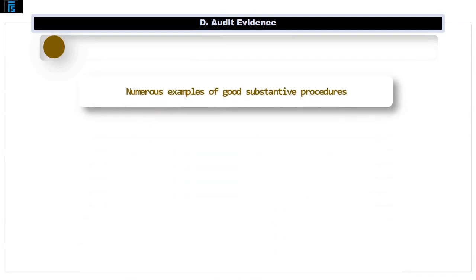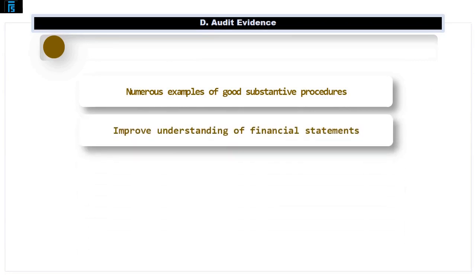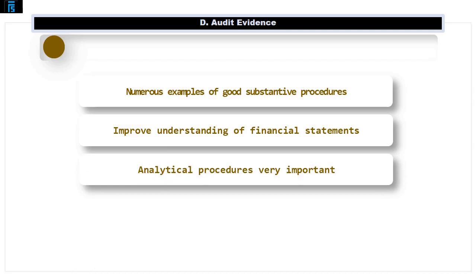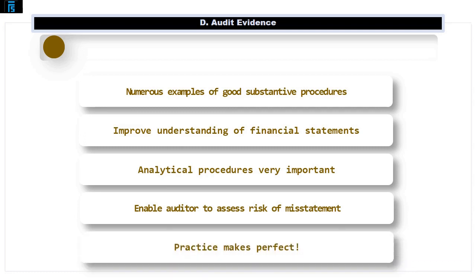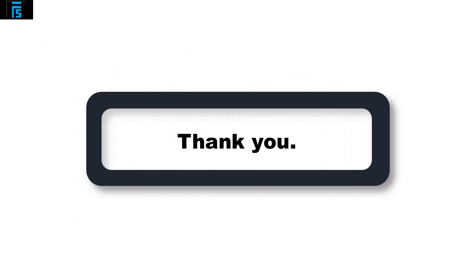There are many examples of good substantive audit procedures for individual balances within the financial statements. Having a strong understanding of the financial statements and how they are prepared will help you remember the key audit procedures to identify material misstatements. Analytical procedures feature as a key substantive procedure for many balances — they allow the auditor to assess the risk of misstatements and decide whether to investigate further. Practice makes perfect.